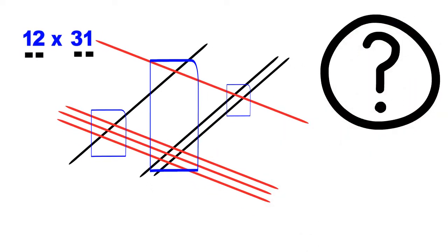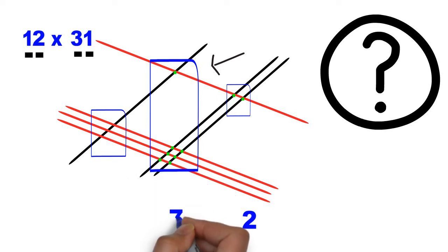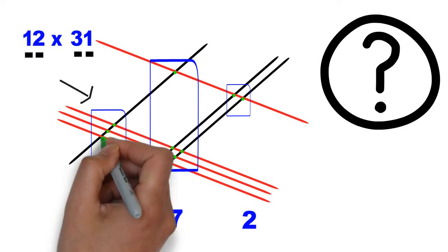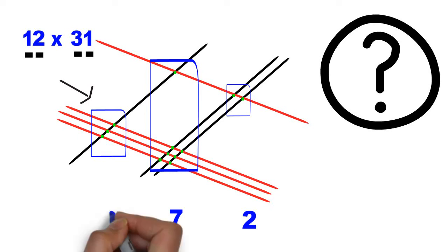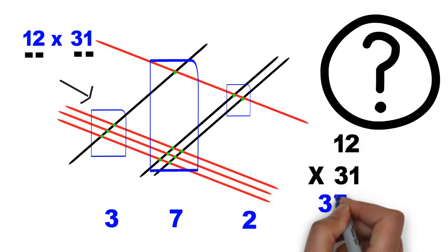Can you count the number of intersections? Here, there are two intersections. 1 and 2. So, we write 2 here. Moving towards the left. This is the second zone. On top, 1 and at the bottom. 1, 2, 3, 4, 5, and 6. So, total, 7. And what about the last zone? 1, 2, and 3. So, we write a 3 under that zone. Well, that's the correct answer. 12 times 31 is 372.